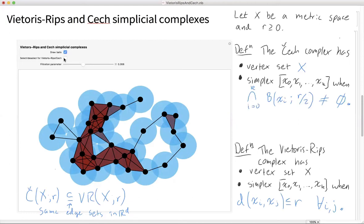But we've seen that we might have three edges in the Čech complex, but no filled in triangle. In the Vietoris-Rips complex, we necessarily do have the filled in triangle. So the Vietoris-Rips complex might be larger.